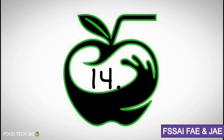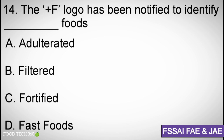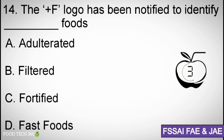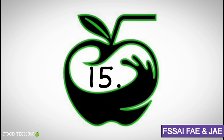Question number fourteen: The +F logo has been notified to identify — Options: A) Adulterated, B) Filtered, C) Fortified, D) Fast foods. Correct answer: C) Fortified.